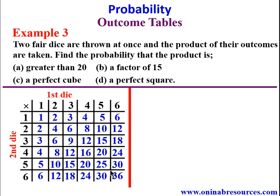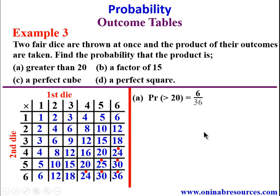For problem A, the probability of getting a product greater than 20. 20 is not inclusive. The values greater than 20 are: 24, 25, 30, 24, 30, and 36 — that is 6 entries. So the probability is 6/36 = 1/6 in simplest form. That is the probability of obtaining a product greater than 20.